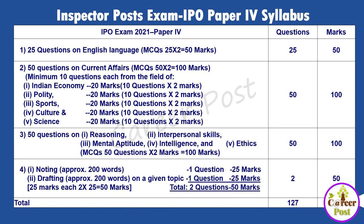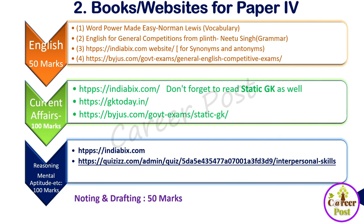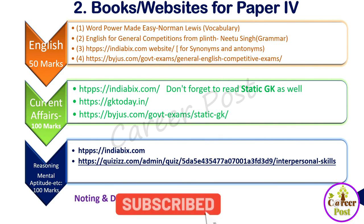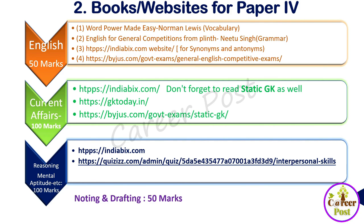Now let us see what books and websites to refer to for Paper 4. For English — which is for 50 marks — the first book recommended is Word Power Made Easy by Norman Lewis, which builds vocabulary through the root word model. It takes about 2 to 3 months at half an hour per day to complete. The next resource is English for General Competitions from Neetu Singh for grammar. For synonyms and antonyms, you can refer to the indiabix.com website or any other grammar book that suits you.